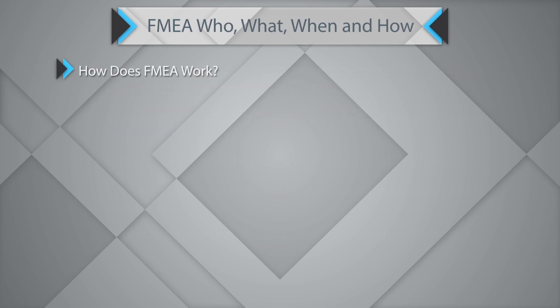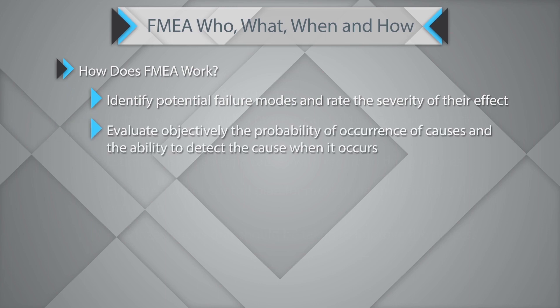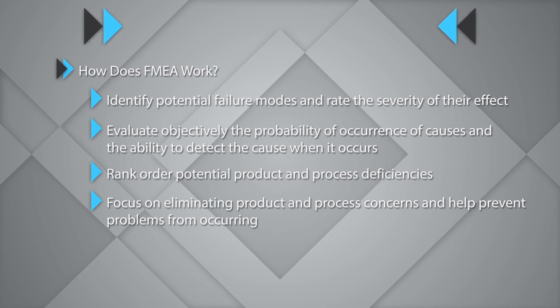How does the FMEA work? FMEA will help identify potential failure modes and rate the severity of their effects, evaluate objectively the probability of occurrence of causes and the ability to detect the cause when it occurs, rank and order potential product and process deficiencies, focus on eliminating product and process concerns, and help prevent problems from occurring. Hope this simple video helps you understand the FMEA tool. Thank you.